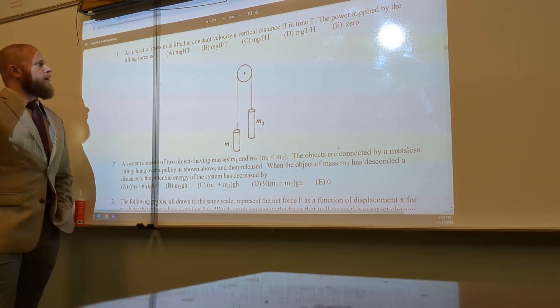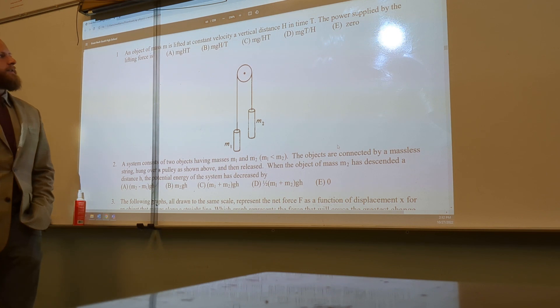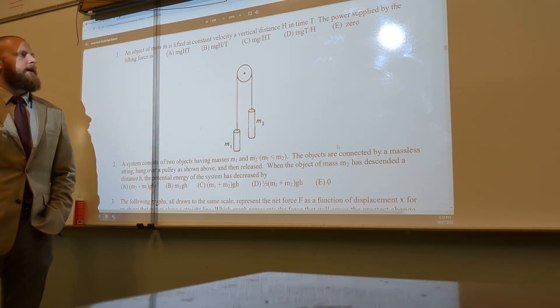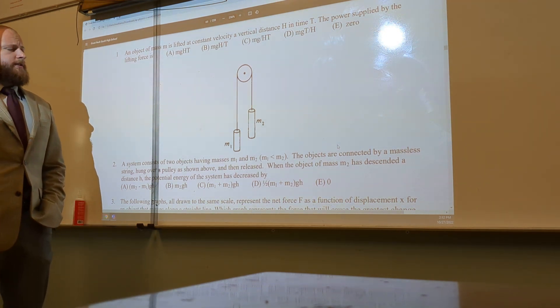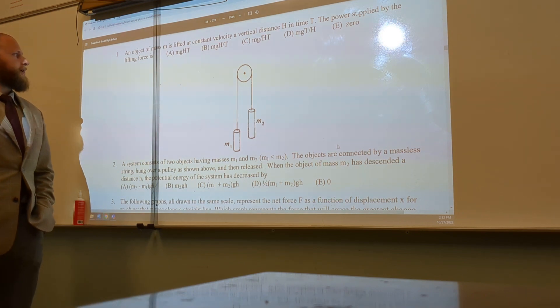Let's go ahead and look at number one. An object of mass m is lifted at a constant velocity, a vertical distance h in time t. The power supplied by the lifting force is these different options.